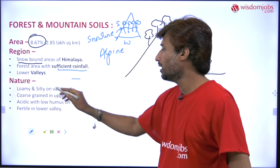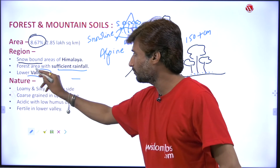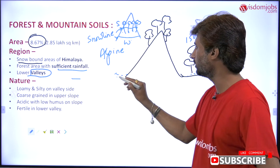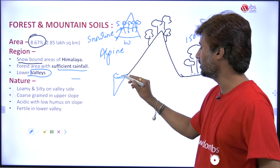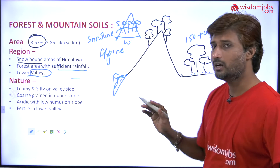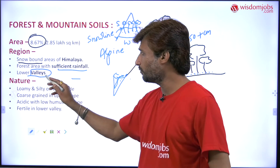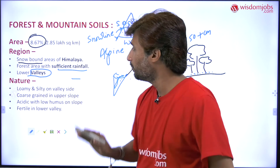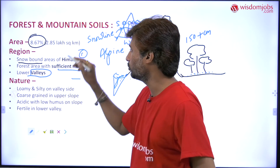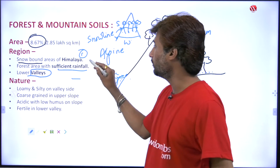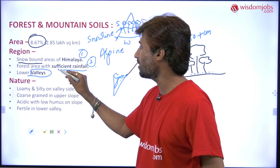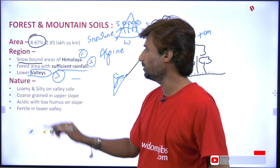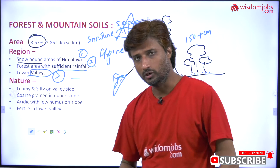You will also find this type of soil in lower valleys, where sediments get deposited. So to summarize: number one, the snow-bound areas of the Himalayas; number two, forest areas with sufficient rainfall; and number three, the lower valleys where sediments accumulate.